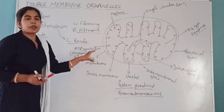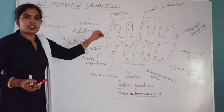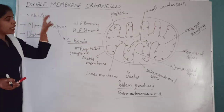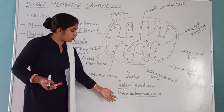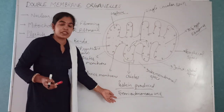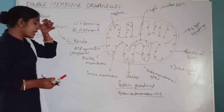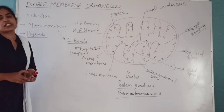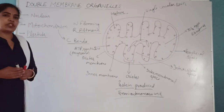In summary, mitochondria produce energy so they are called the powerhouse of the cell, and because they produce half of their required proteins, they are called a semi-autonomous unit. We will discuss the next double membrane organelle in the next video. Thank you.